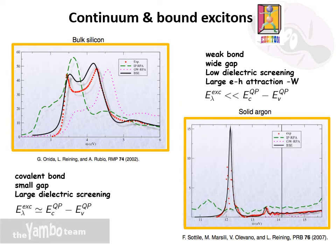Now that all the main physical and mathematical ingredients have been introduced, we can discuss a few representative examples. On the left is reported the emblematic case of silicon, where at the Bethe-Salpeter level the agreement with experiment is almost good. The remaining discrepancies can be explained in terms of temperature effects. In this case, being a large dielectric screening material with a small gap and covalent bonds, essentially only a renormalization of the peaks above the electronic gap occurs, with only continuum excitons, meaning the excitonic eigenvalues are almost equivalent to the quasiparticle transition energies.